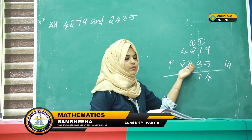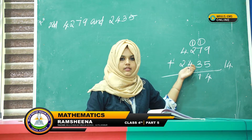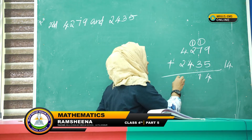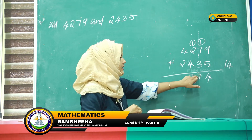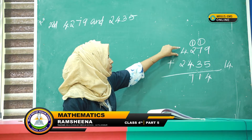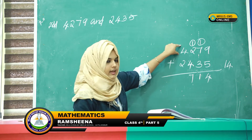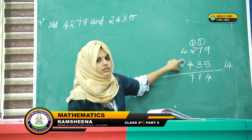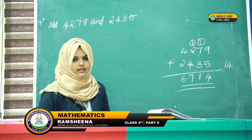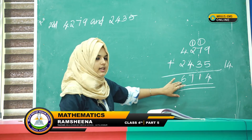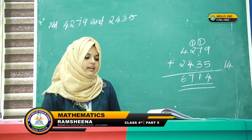Then 2 plus 4 is 6. Plus the carried 1 is 7. Then the last number: 4 plus 2 is equal to 6. So the answer is 6,714.